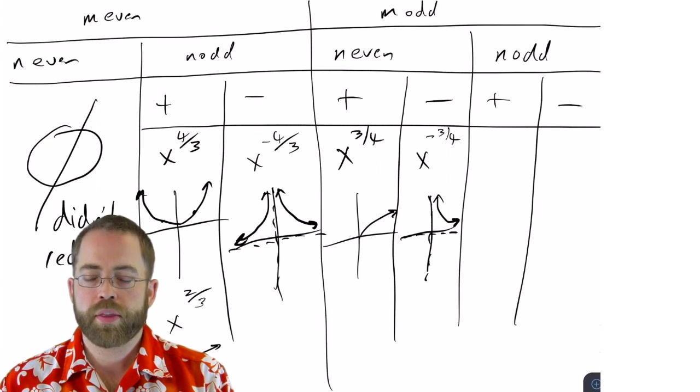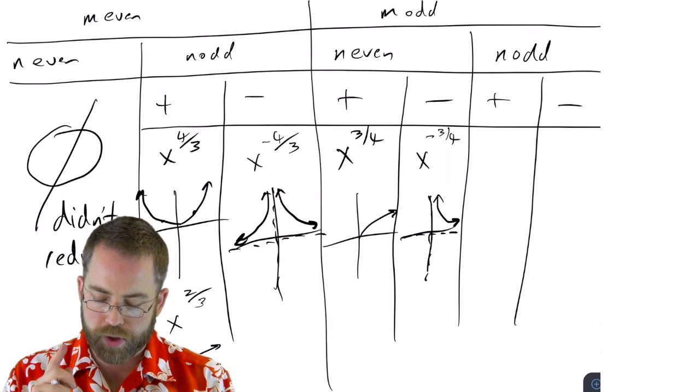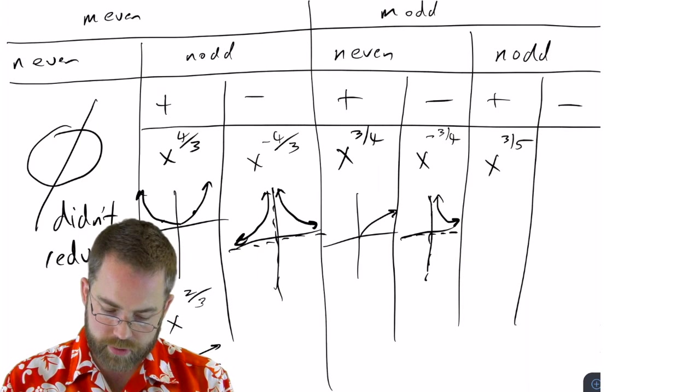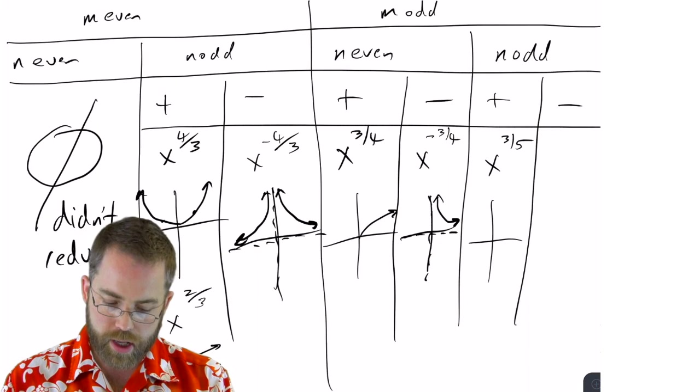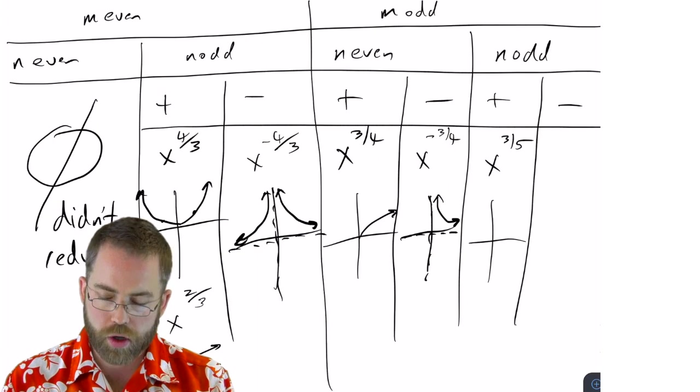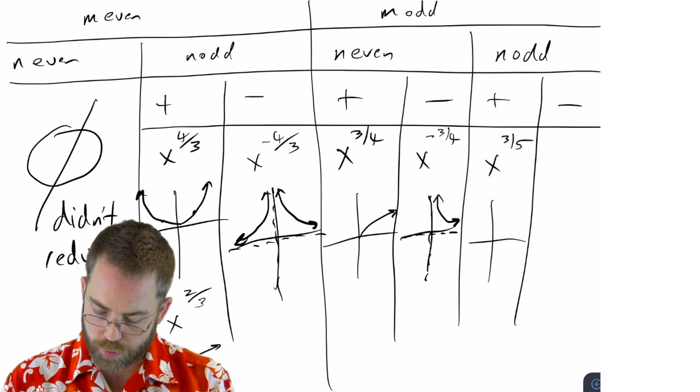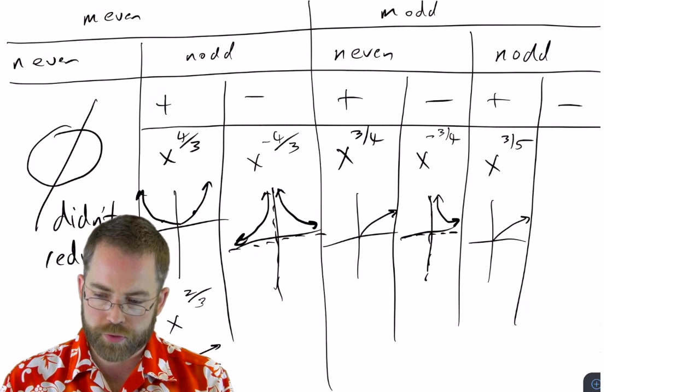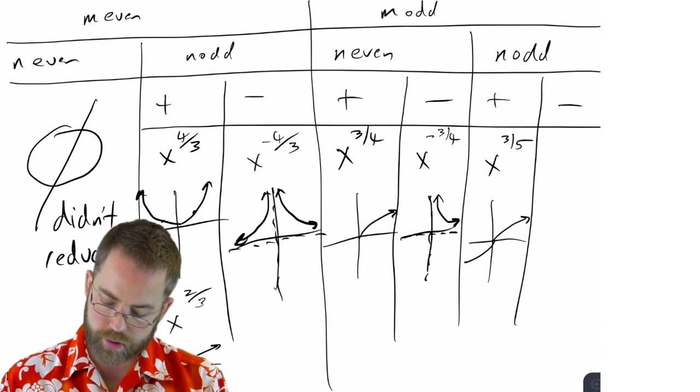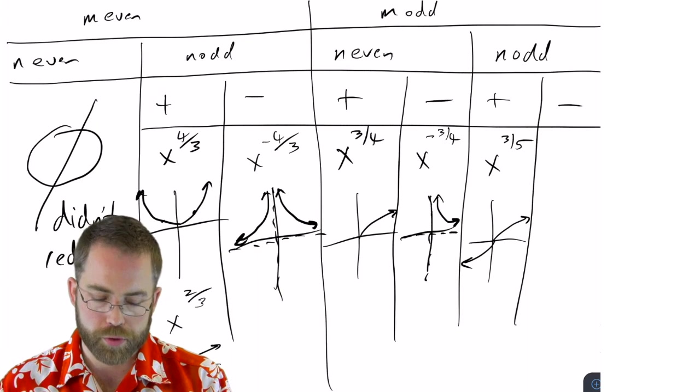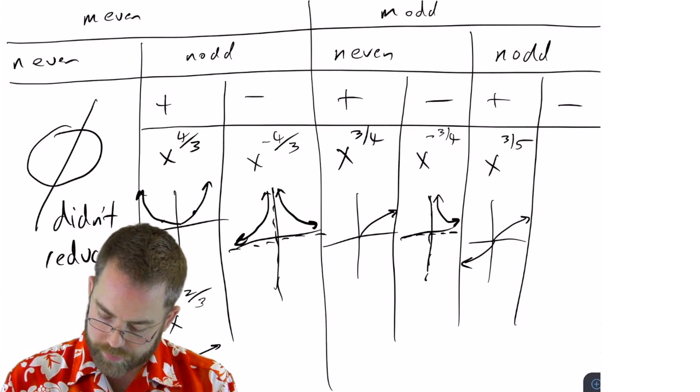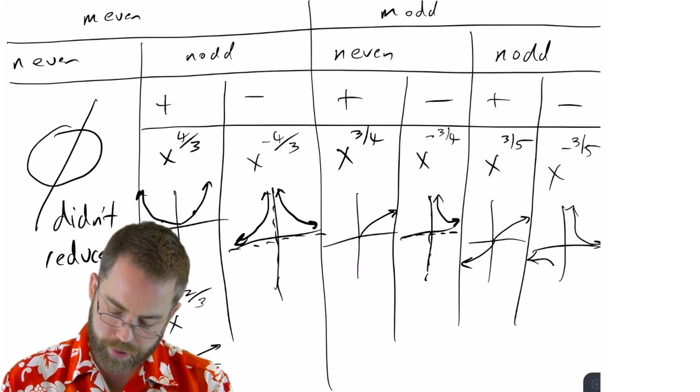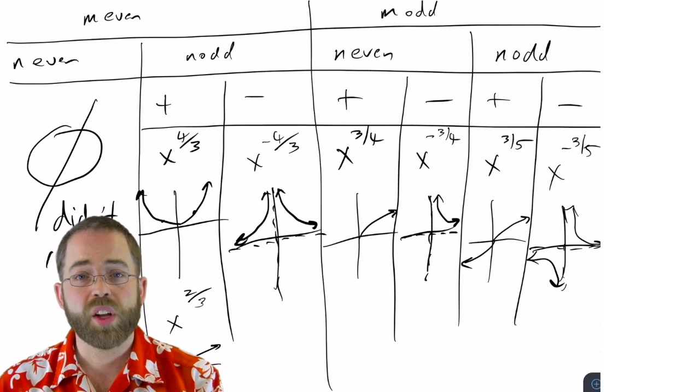Then comes the coolest one of all. The one that goes every which way is when you've got odd over odd. So let's do three fifths. And that means that when I plug in a positive, but I made the fraction less than one, so I need to shoot off that way. And then negatives will still be negative. So that's going to go that way. That's basically going to look like a cube root. And then if I have the negative of that, that goes this way and that way with asymptotes there.